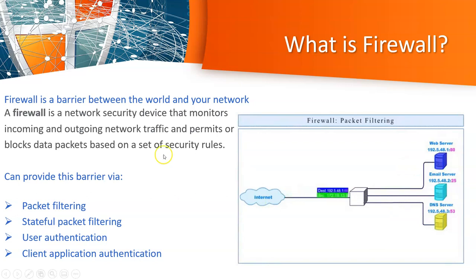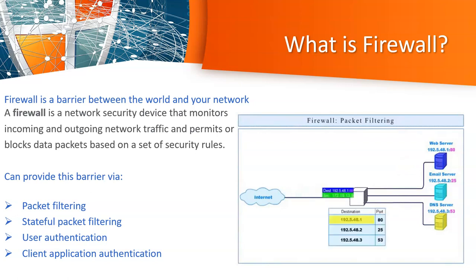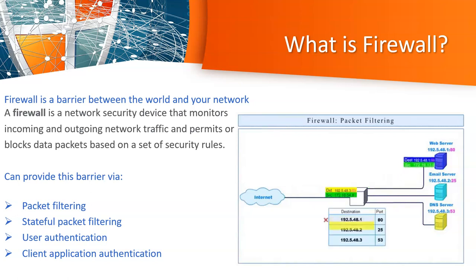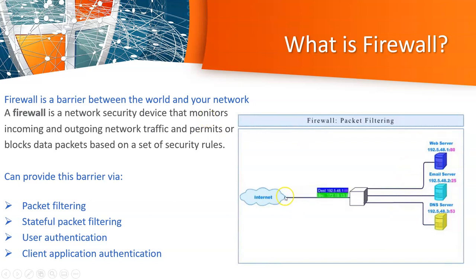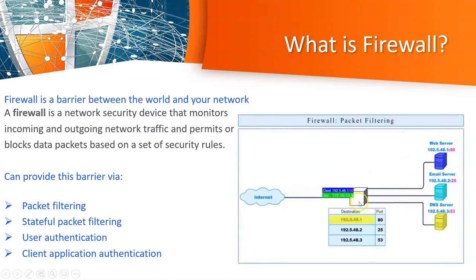In summary, the firewall will become a barrier, or act as a security guard — like a police officer — that controls the boundary between the outside world and your network. So whatever traffic needs to go into your network will be safeguarded, filtered, and controlled by the firewall.